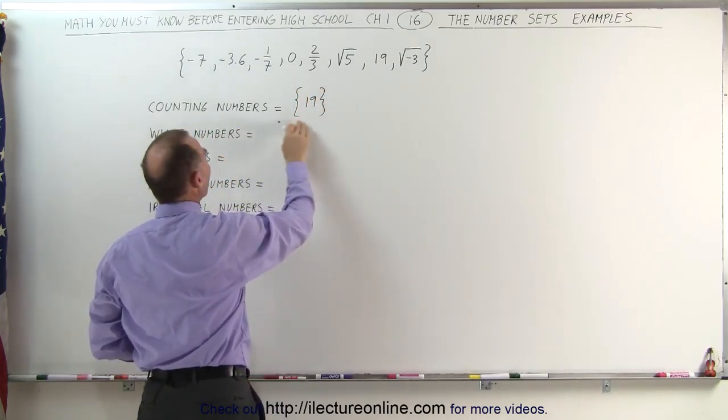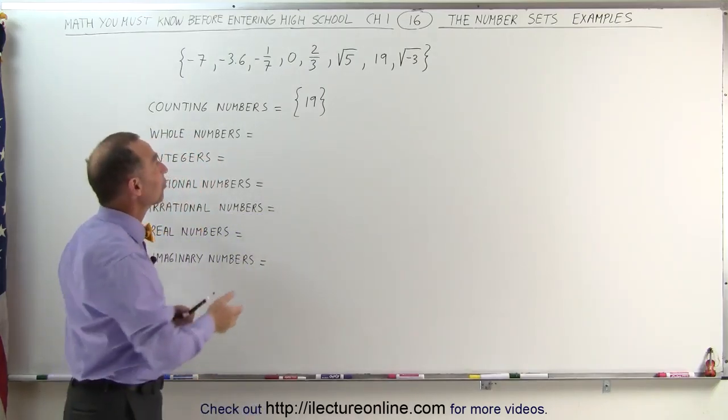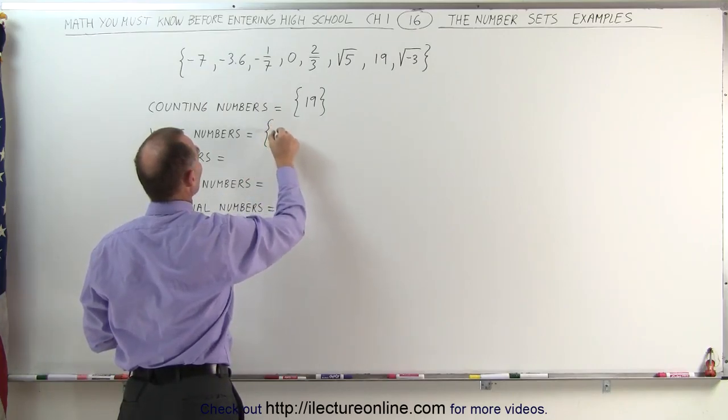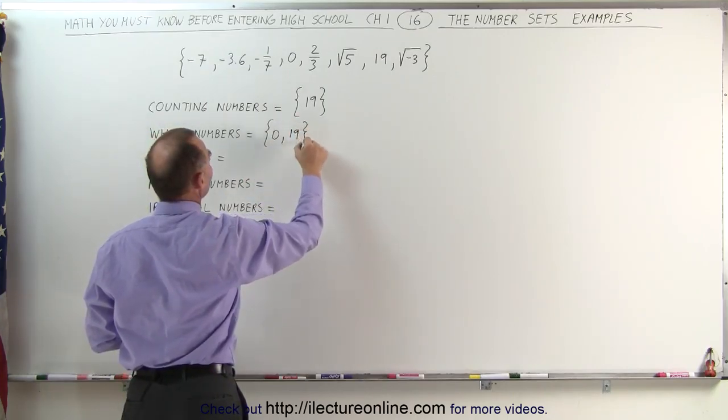Whole numbers are all the counting numbers plus the number zero if it's there, and yes, we do have the number zero, which means the whole number set is the numbers zero and the counting number 19.